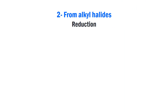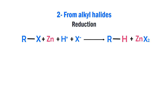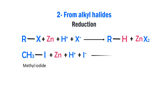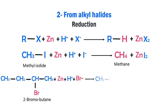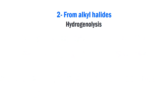An alkane is produced when an alkyl halide reacts with zinc in the presence of an aqueous acid. Methyl iodide reacts to give methane, while 1-bromobutane reacts with zinc to give n-butane. Alkanes can also be prepared from alkyl halides using palladium on charcoal as a catalyst.